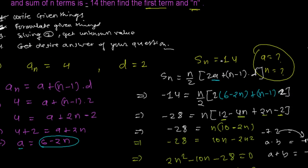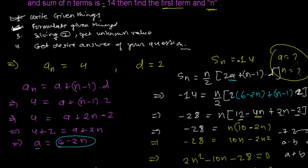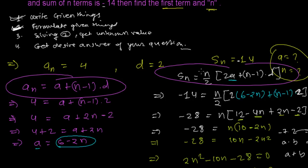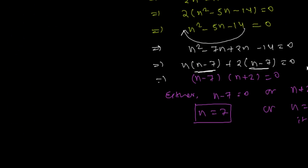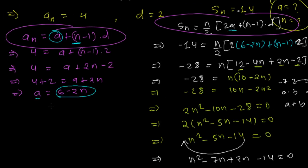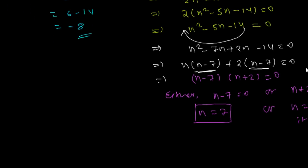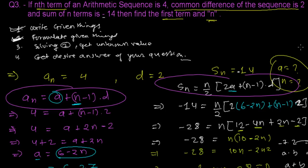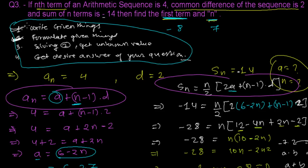We've completed steps two and three — formulating and solving for the unknowns. Now step four: get the desired answer. With n = 7, we find a = 6 - 2n = 6 - 2×7 = 6 - 14 = -8. So the first term a = -8 and the number of terms n = 7. Always follow these four steps — they'll definitely help you.